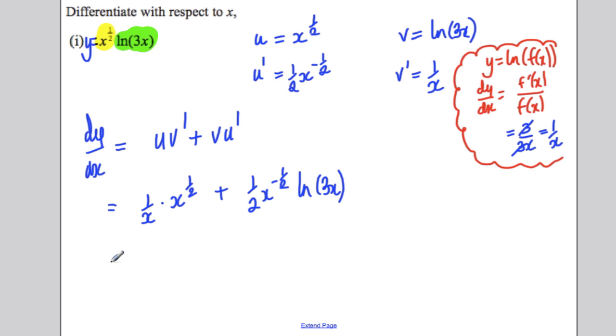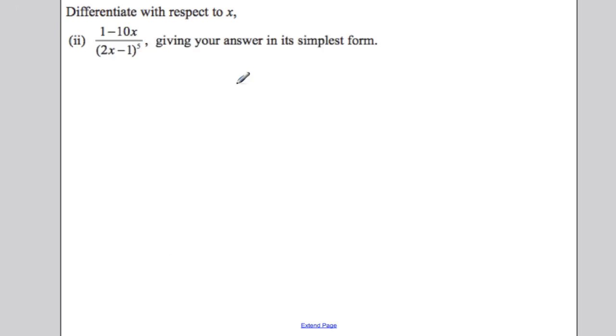But if you wanted to simplify it, this is x to the half over x, which is just 1 over x to the half, plus 1 over 2 times 1 over x to the half ln of 3x. And you could factorize out 1 over x to the half, etc. But there's no need. This was absolutely fine. Now, it's the second part where you are asked to simplify.